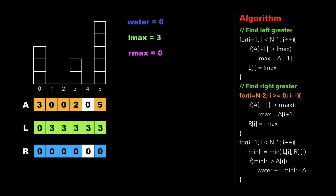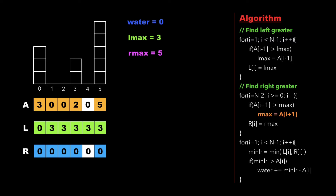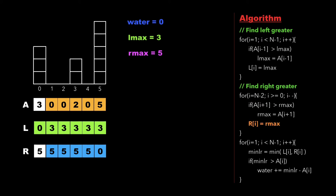Next we calculate the right greatest element for all elements except the last one. We traverse the array from i = n - 2 (the second last) down to 0. We check whether a[i + 1] is greater than rmax. Since 5 is greater than 0, we update rmax as 5 and insert it into r[4]. We keep checking for r[3] and continue until we reach index 0. Finally, the right greatest array r is fully updated, and since i reaches -1 which is not greater than or equal to 0, we exit this loop and move to calculating the water.